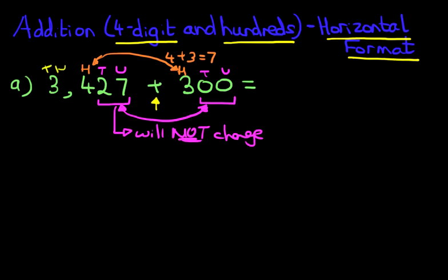As for the thousands, well, in this example, and only in this example, the 3 does not change. So 3,427 plus 300 is 3,727. The only digit that has changed in this example is the hundreds. The tens and the units never change if we are adding hundreds. The thousands may or may not change.